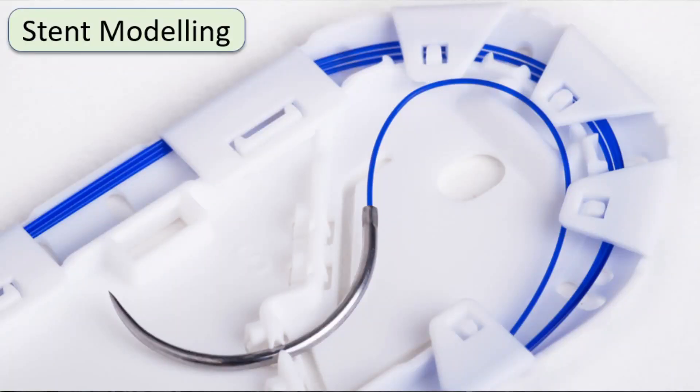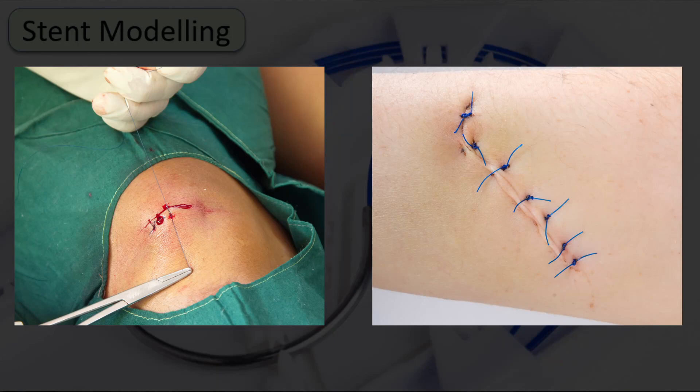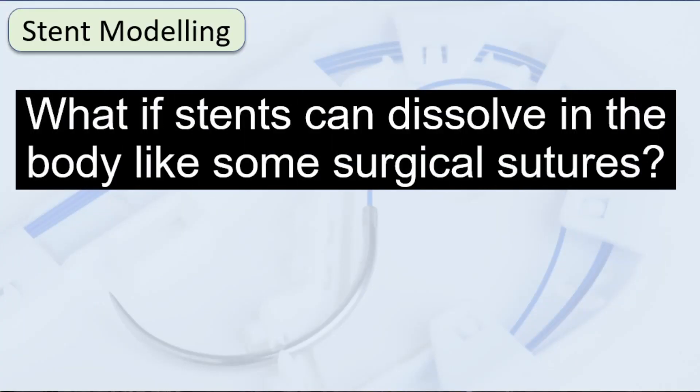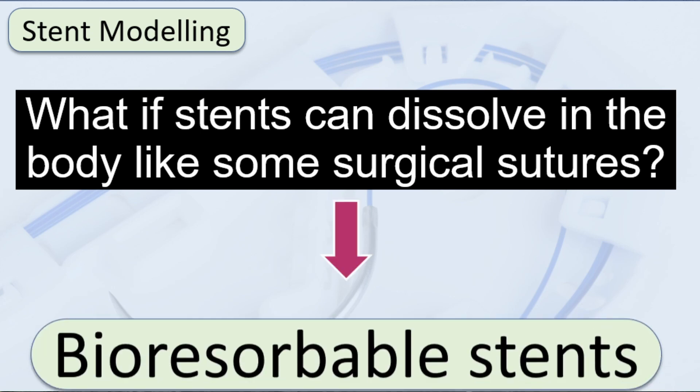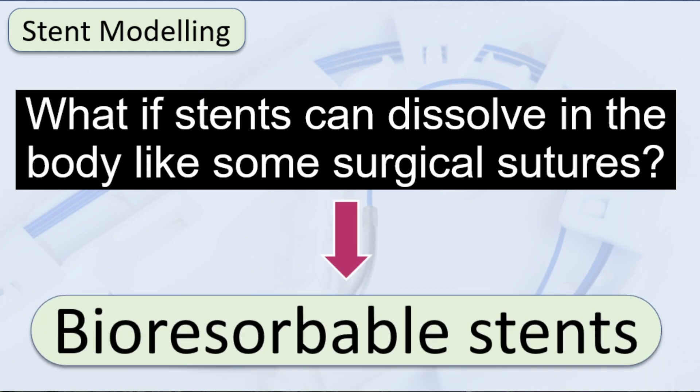The new idea is: what if we can make these stents from something that can dissolve in the body? This is not unusual because we already have suture materials that are bioresorbable and dissolve in the body. So can we not make stents that are able to dissolve in the body? Of course we can, and there is ongoing work in this research. This leads us to the idea of a new class of stents called bioresorbable stents.